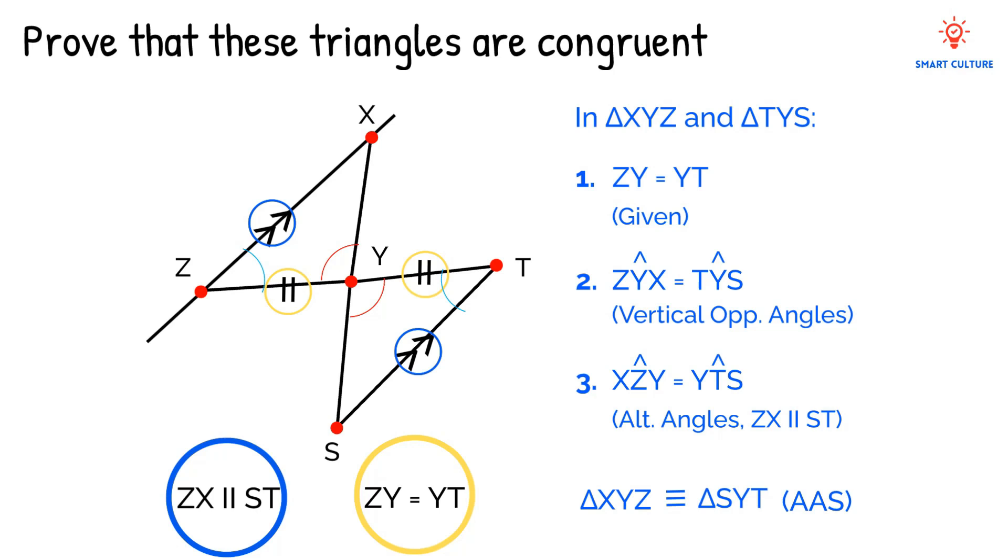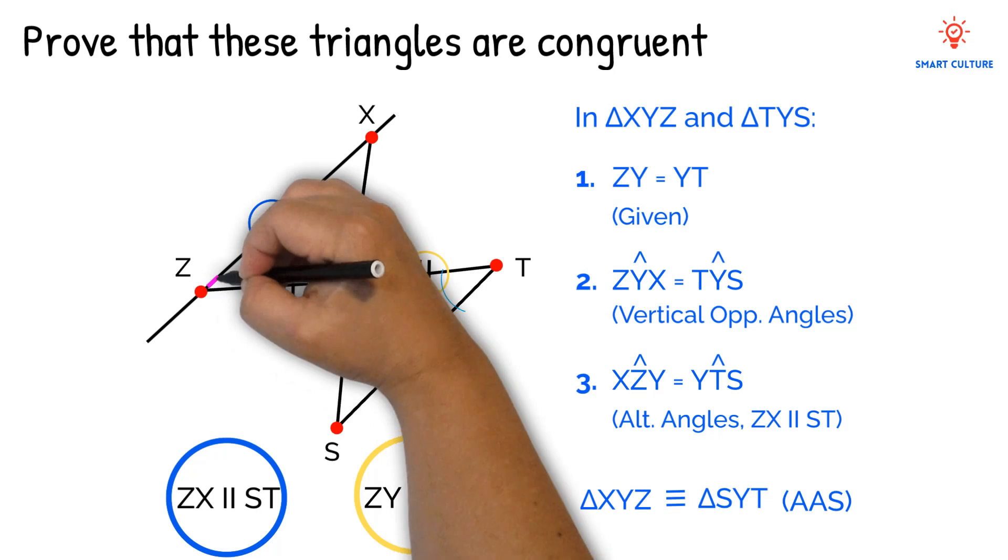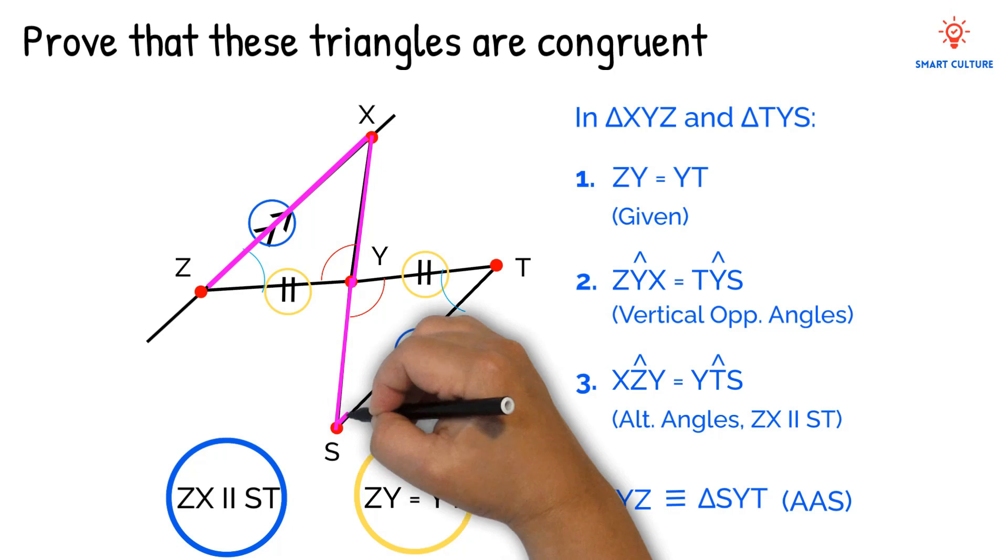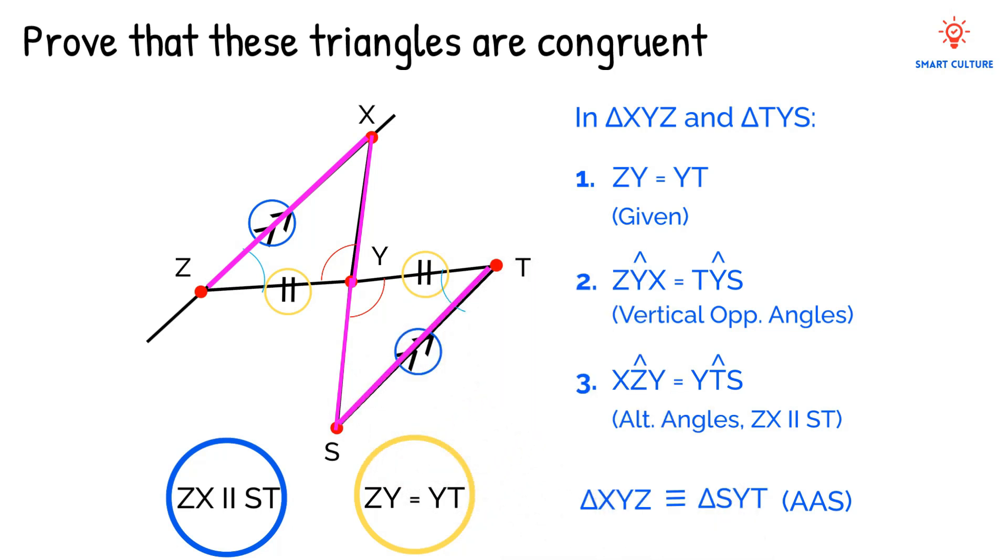Take note of the order of the letters for the triangle. We can't say triangle XYZ is congruent to triangle TYS. We have to make sure that the letters of the corresponding vertices from both triangles appear in the same position in the notation. Angle ZXY corresponds with angle YST. Therefore, we must make sure that the letters of the triangles match up with the corresponding angles.